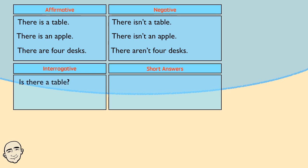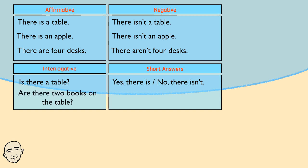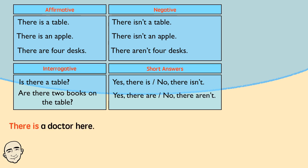Interrogative: Is there a table? Short answers: Yes, there is. No, there isn't. Are there two books on the table? Yes, there are. No, there aren't.